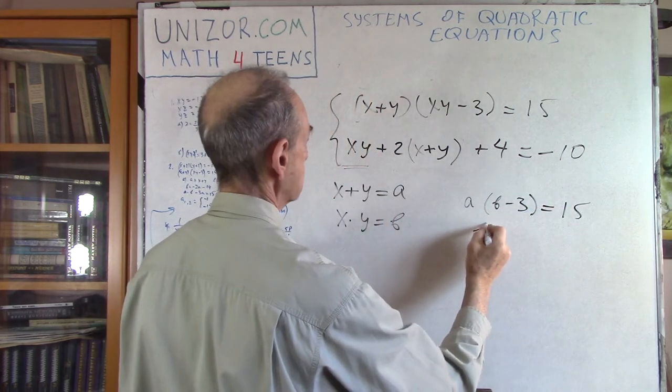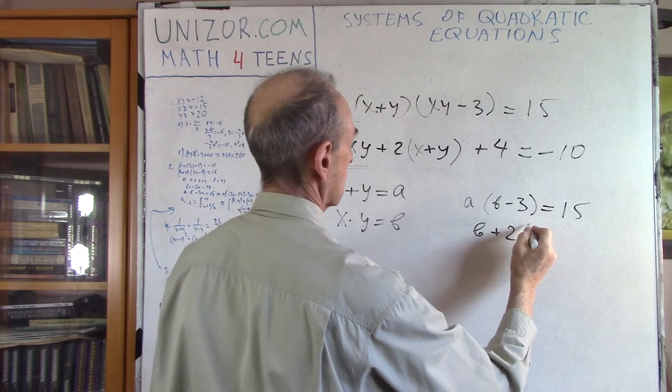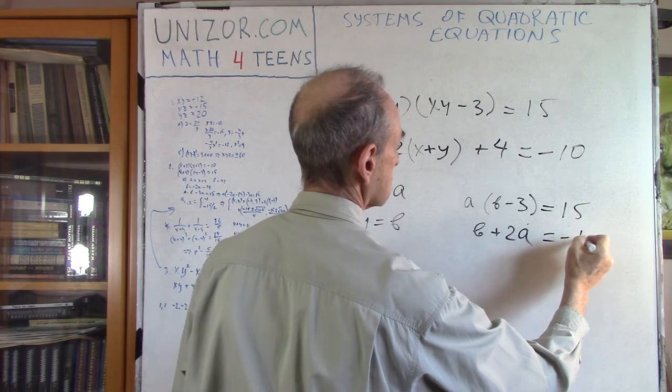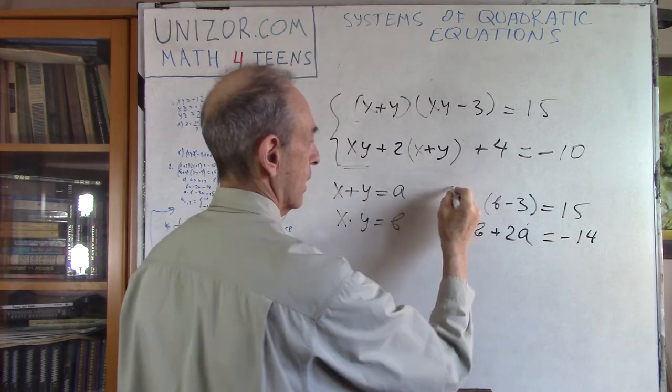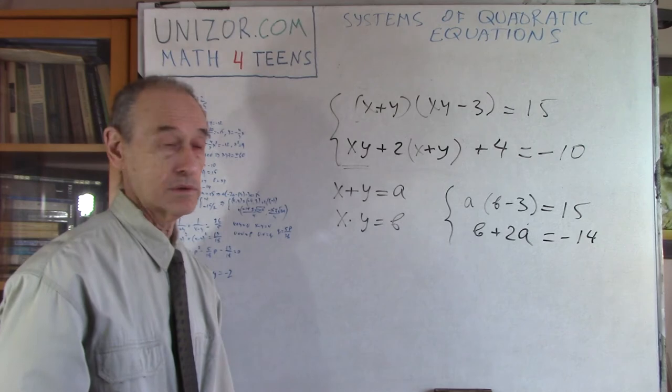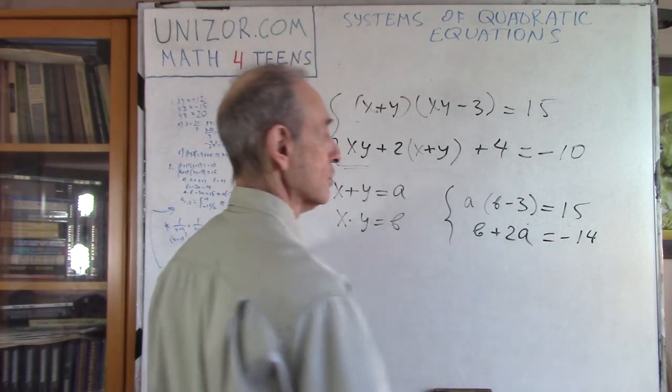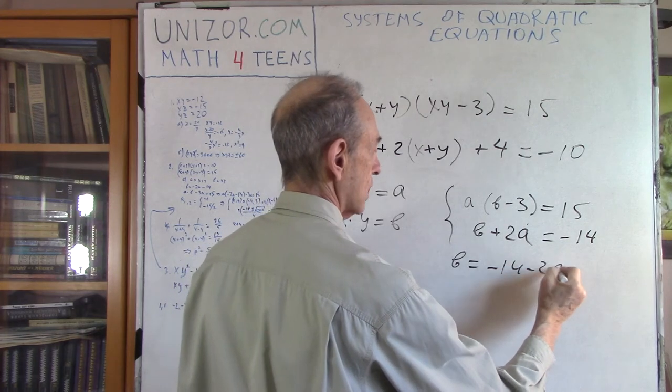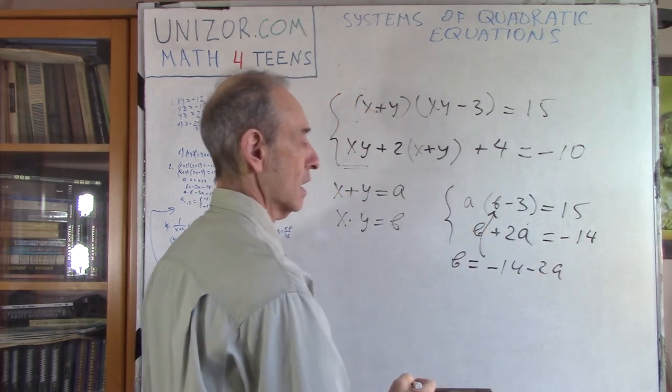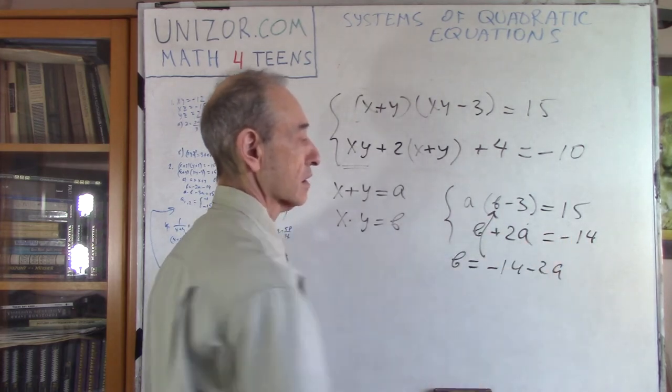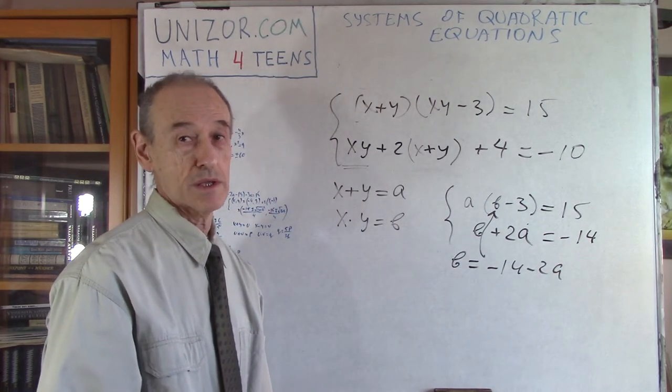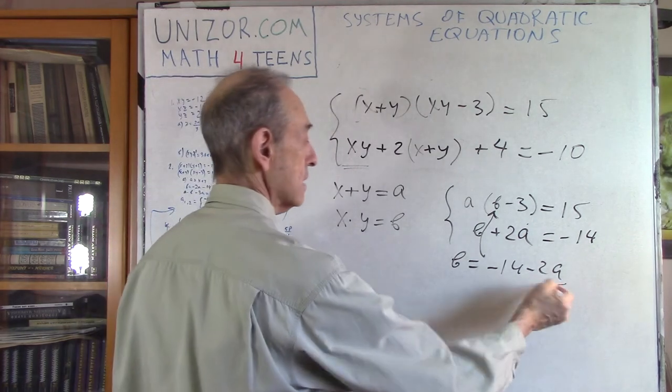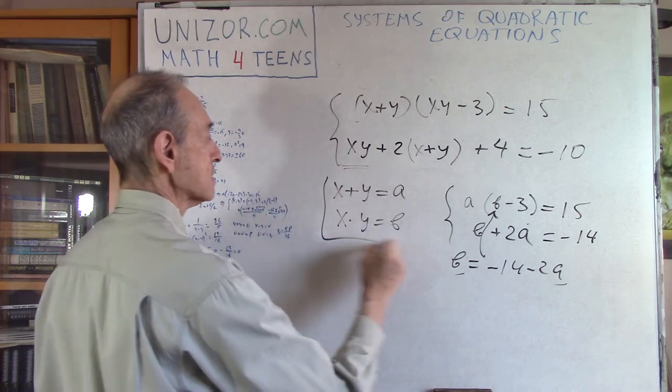Because this is multiplication, my higher degree equation will have a lower degree if I substitute it this way. Let's see what happens. This is A times B minus 3 equals 15, and this is B plus 2A equals minus 14. Now, this is better because here I can just use the substitution. I will put B equals minus 14 minus 2A, substitute into this, and I will have a quadratic equation for A which I can solve.